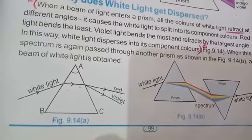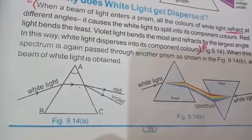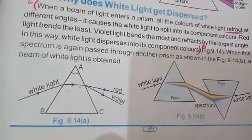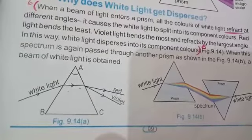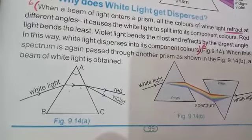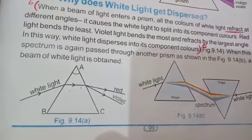The red color light bends the least, while violet light bends the most and refracts by the largest angle.